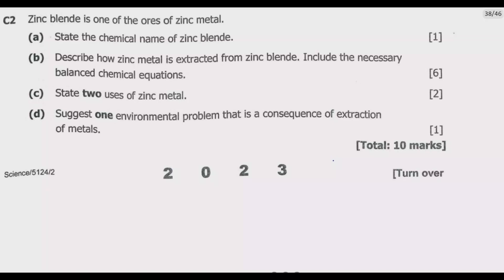Let us move straight to question C2. Zinc blende is one of the ores of zinc metal. Part A: state the chemical name of zinc blende. Part B: describe how zinc metal is extracted from zinc blende, including the necessary balanced chemical equations. Part C: state two uses of zinc metal. Part D: suggest one environmental problem that is a consequence of extraction of metals.